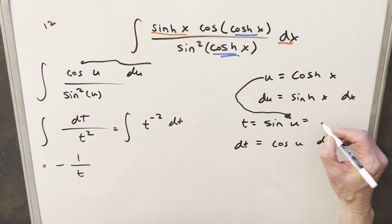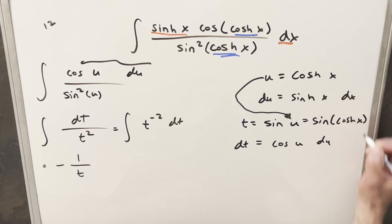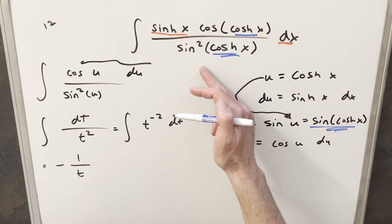So for our t value, I can actually write this as sin(cosh x). And so it turns out if we just chose this substitution initially, it would have went a little quicker. We could have saved this step and just did one substitution.